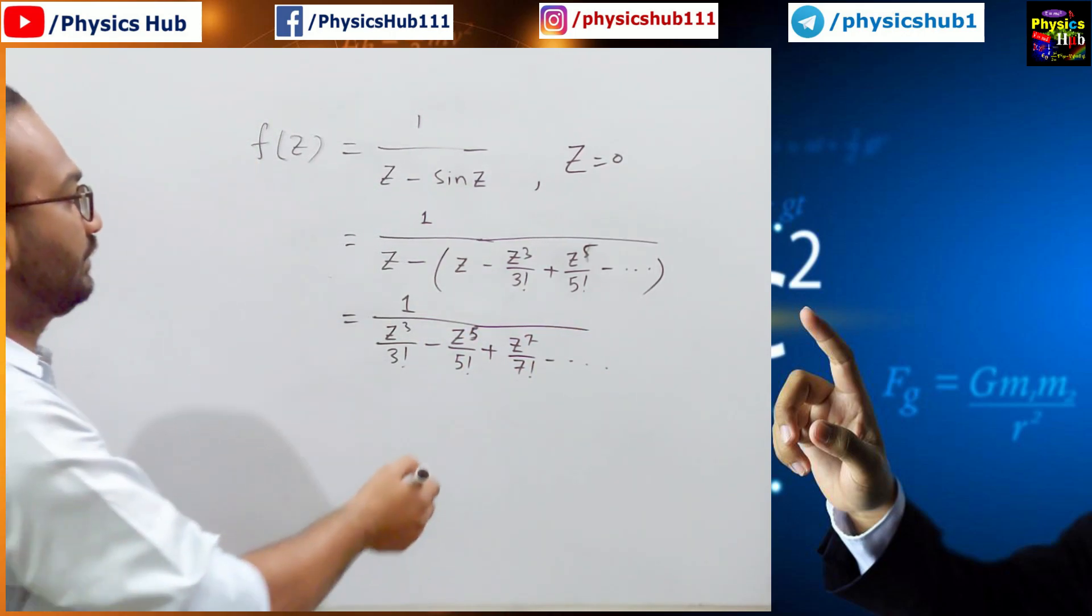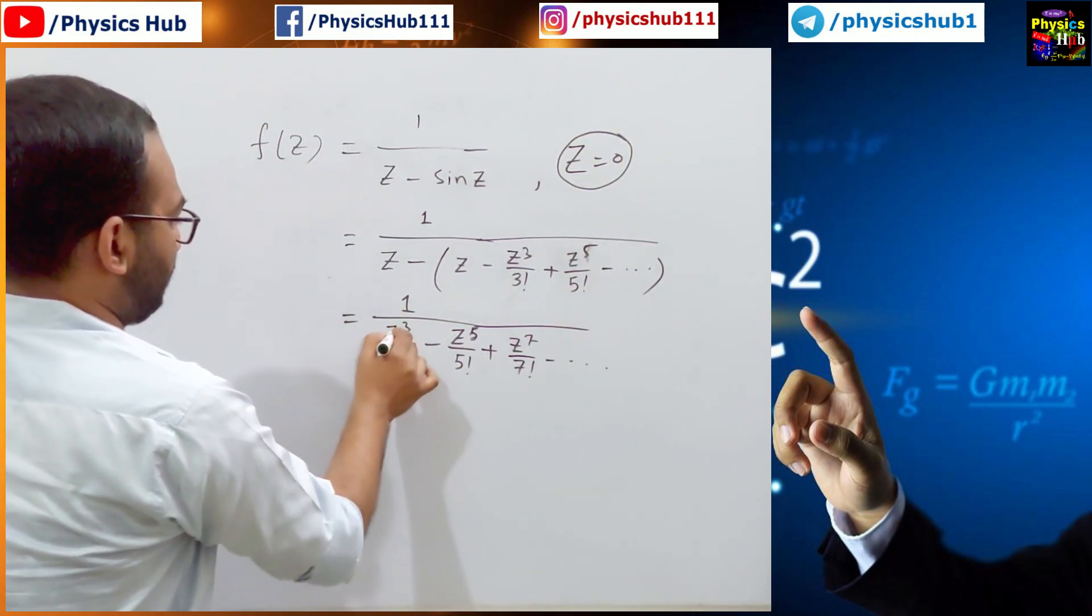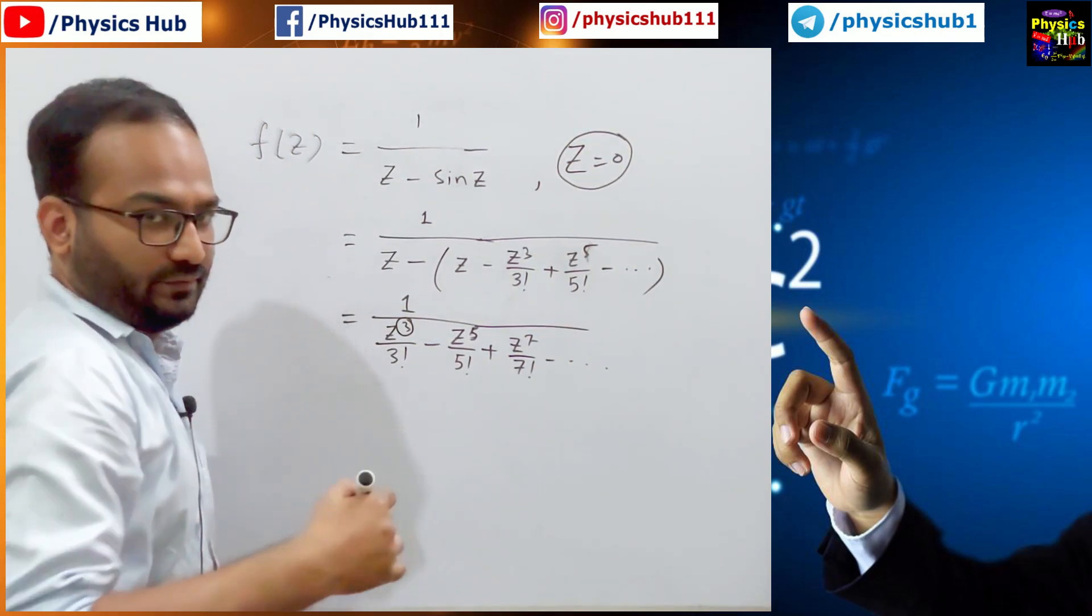So we can see that if you consider z equals 0, then what is the pole? The pole is of order 3.